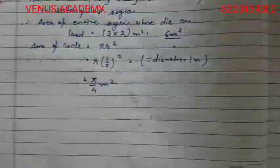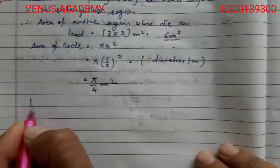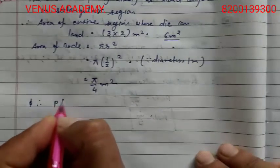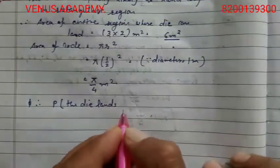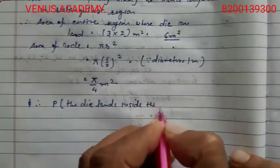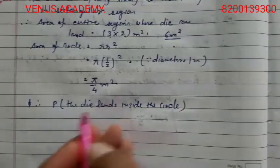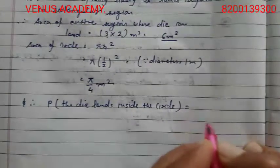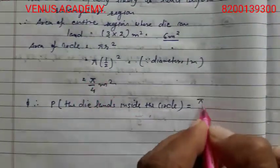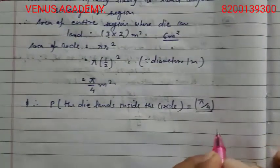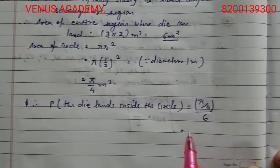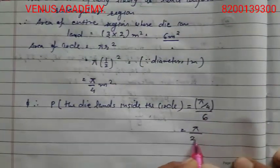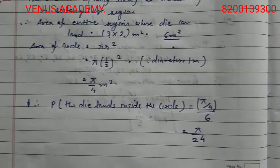The die is equally likely to land anywhere in the rectangular region. Therefore, P(die lands inside the circle) = (area of circle) / (area of rectangle) = (π/4) / 6 = π/24. That is the probability. Today we covered question numbers 18, 19, and 20. Thank you.